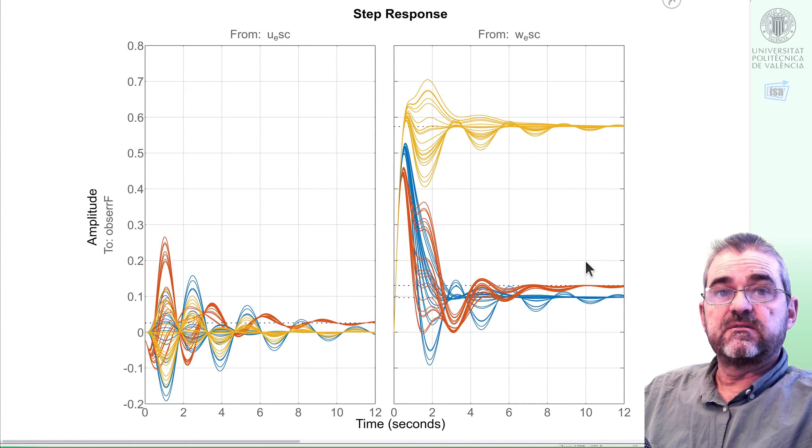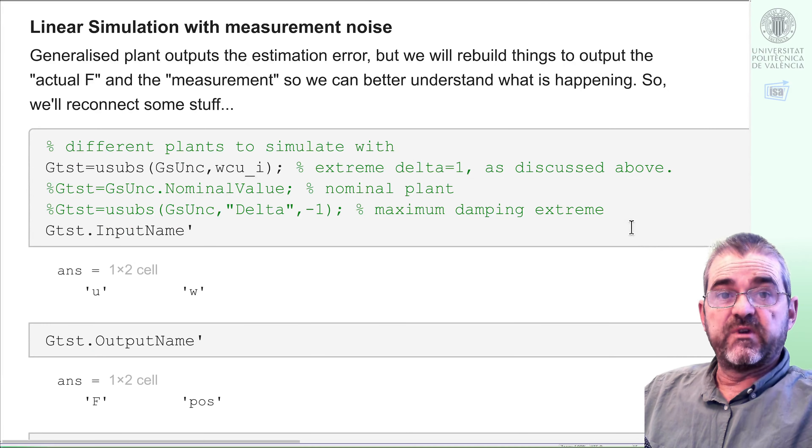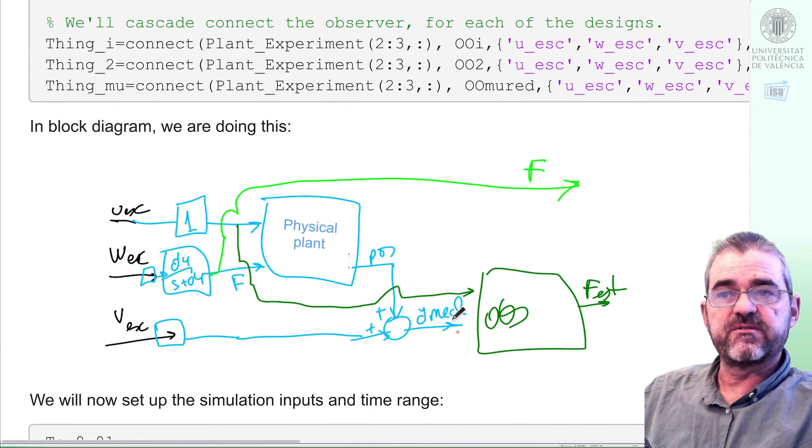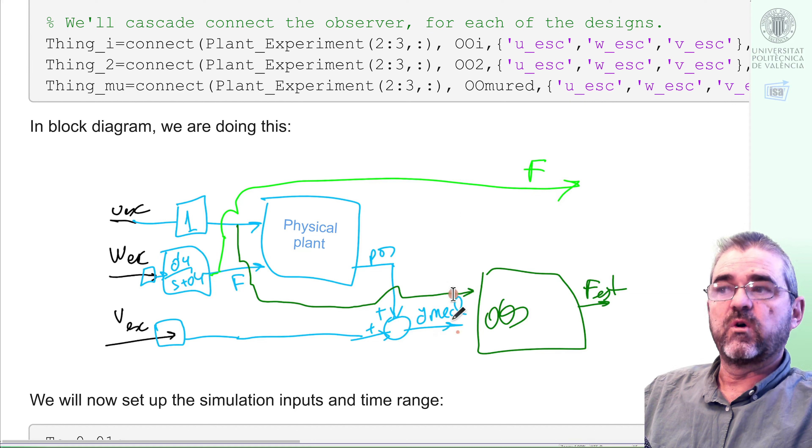So this is the step response. Now we will carry out the time simulation with an arbitrary input. Again, you can put whatever input you wish, but we will simulate some sinusoidal stuff in process noise and random thing in measurement noise. First, we need to connect things. So we will pursue building these block diagrams in which we will have a physical plant in cyan, and then I will have sort of three outputs, the true force band limited, the known input and the sensor measurements, and I will feed the last two here to the observer and get the estimated force to compare with the actual one.